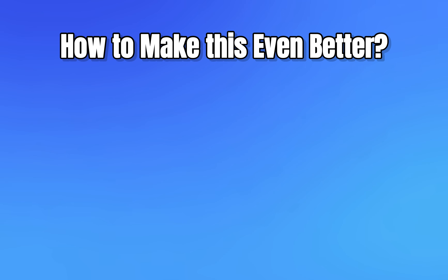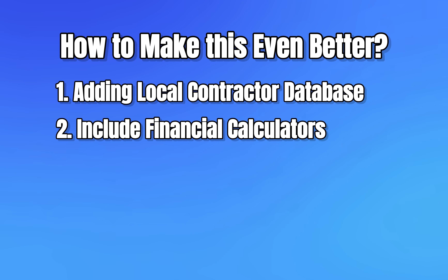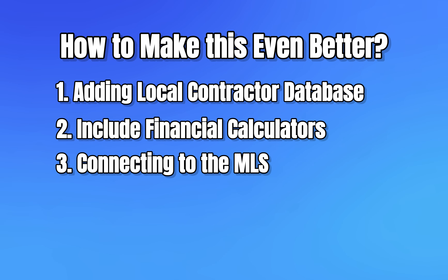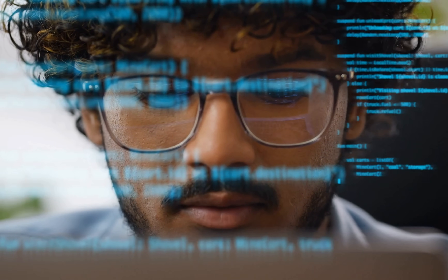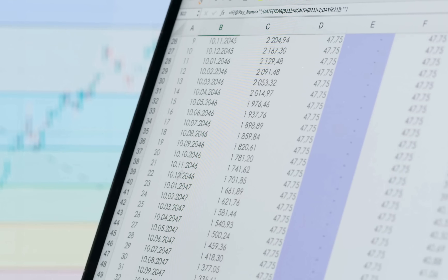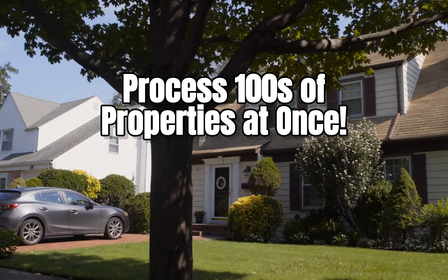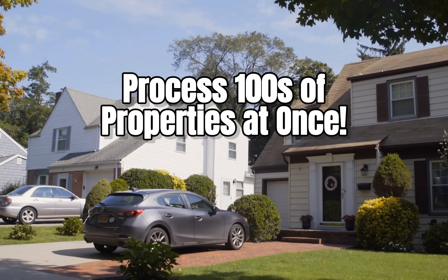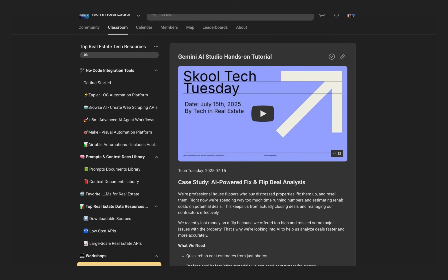To take this project further, some considerations could be adding your local contractor database, including financial calculators, connecting to the MLS for comps, and adding profit margin calculators. The possibilities are really endless, and you can build all of this without writing a single line of code. Imagine uploading a spreadsheet of properties — it goes to get the images for you, and within seconds you know for 100 properties what their difficulty level is. These are the things that are possible and things we discuss in our community.